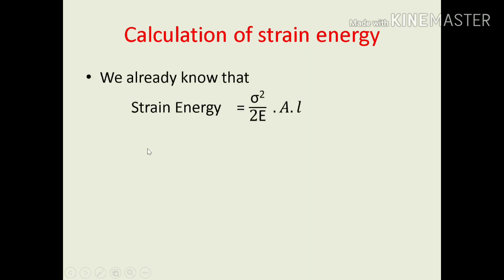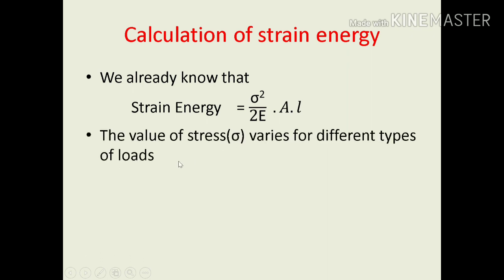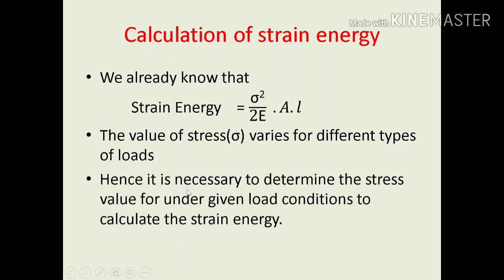The strain energy formula is: strain energy equals sigma squared divided by 2E, multiplied by the area and the length of the bar. The area and length of the bar are fixed constants. The value of sigma depends upon the type of loading — gradually applied load, suddenly applied load, or impact load. The stress value varies for different types of loads, so it is necessary to determine the stress value under given load conditions to calculate strain energy.